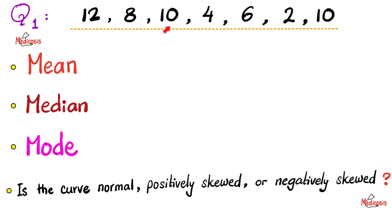Here is a question for you. We have a bunch of data. Please calculate the mean, the median, and the mode. And then tell me whether this curve is a normal distribution curve, a positively skewed curve, or a negatively skewed curve. Please pause the video and try to solve this yourself.